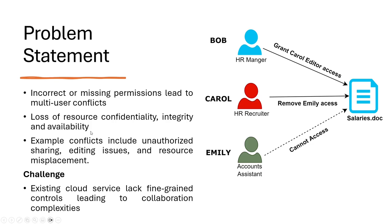For example, consider a scenario where Bob, an HR manager, owns a file named Salaries and shares it with Carol, an HR recruiter, and Emily, an account assistant, as editors. This access allows Carol to add salary information and extend permissions to her Talent Equation colleagues. However, Carol decides to add additional salaries and removes Emily from the file, thus preventing Emily from verifying these changes. As a result, the file's integrity is compromised and Emily loses access to it.